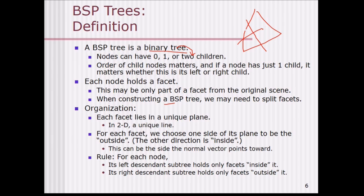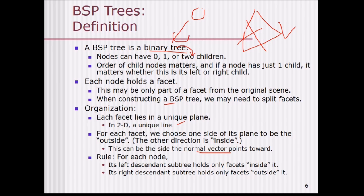The organization is: each facet lies in a unique plane — in 2D, a unique line. For each facet we choose one side of its plane to be the outside, and the other direction is inside, using normal vectors. The rule is: for each node, its left descendant subtree holds only facets which are inside it, and the right descendant subtree holds only facets which are outside it.